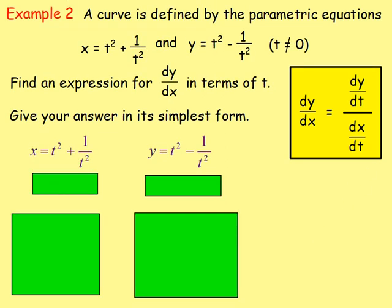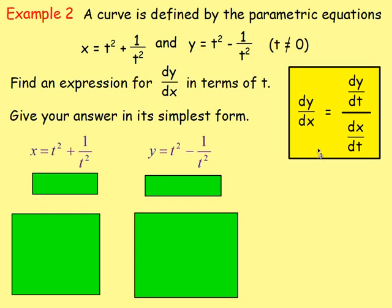Example 2. A curve is defined by the parametric equations x equals t squared plus 1 over t squared, and y equals t squared minus 1 over t squared, where t is not equal to 0. Find an expression for dy/dx in terms of t and give your answer in its simplest form. So x and y are written in terms of t — the third parameter. To work out dy/dx, we need to differentiate both x and y with respect to t, and then substitute both dx/dt and dy/dt into the formula.